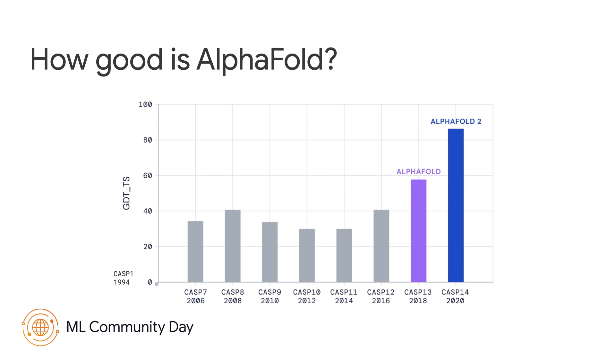AlphaFold makes predictions to such a high level of accuracy that in most cases it matches experiments. How do we know this? CASP is a blind assessment of protein structure prediction.